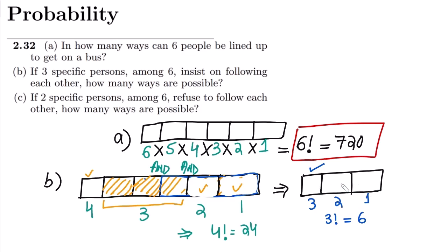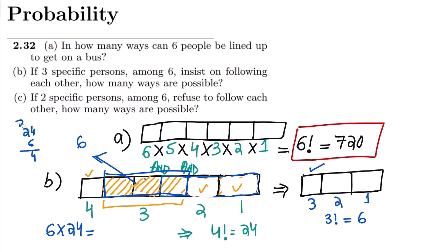So the group of three can be arranged internally in 6 ways, and the four combined spots can be arranged in 24 ways. These two counts combine with each other, so we multiply: 6 × 24 = 144. The total number of possible ways when three persons insist on following each other is 144. That is the answer to Part B.